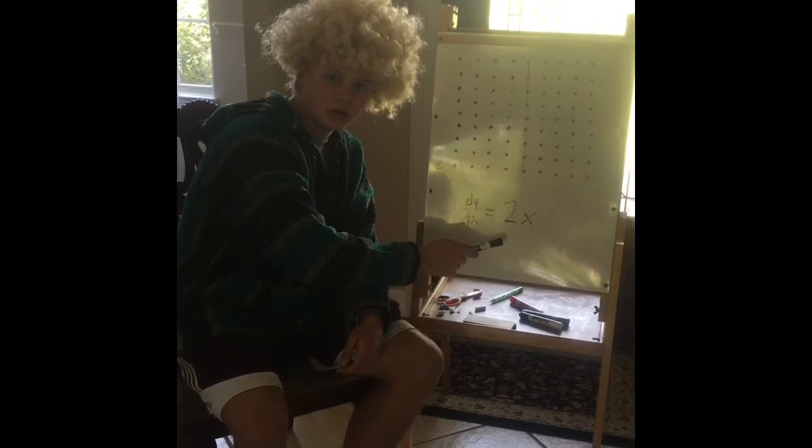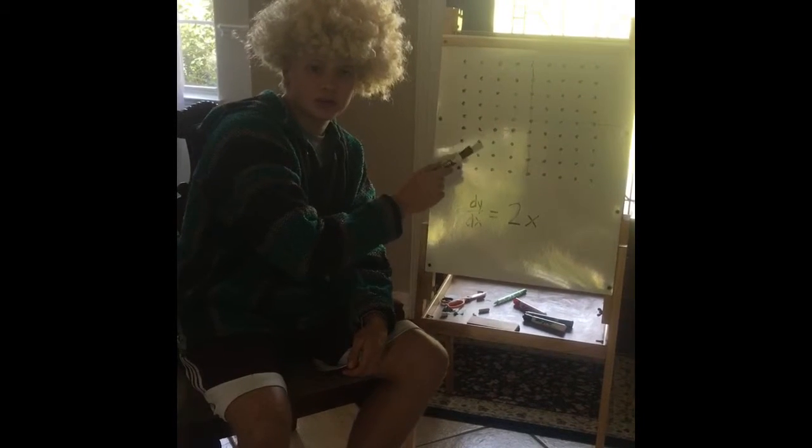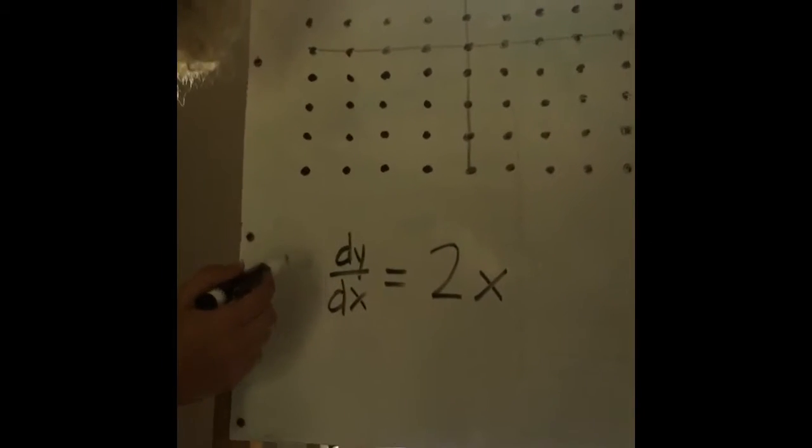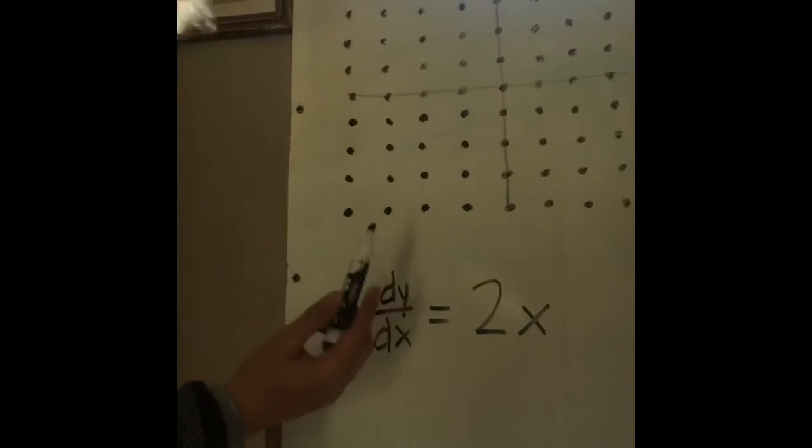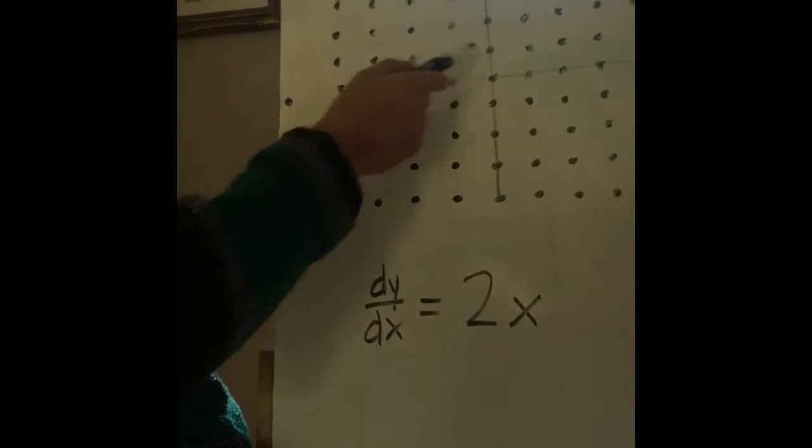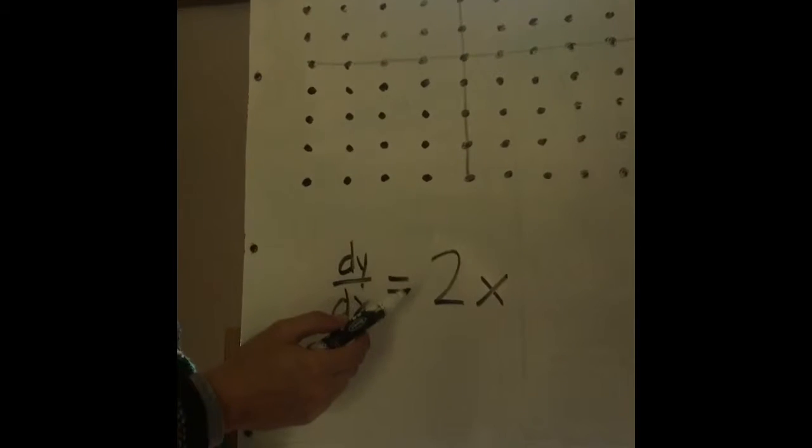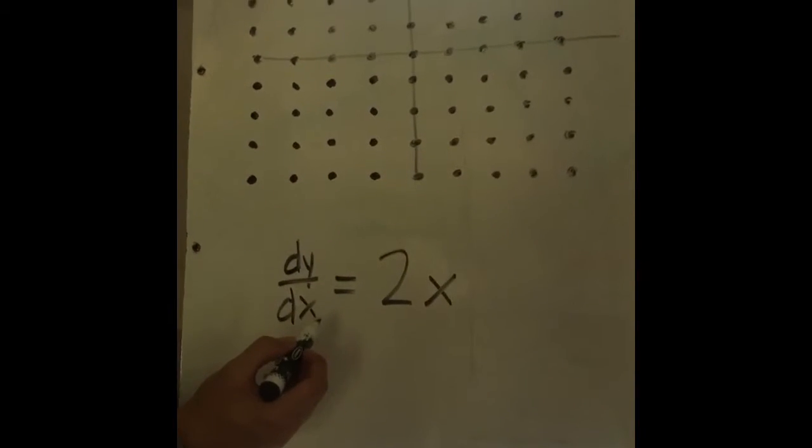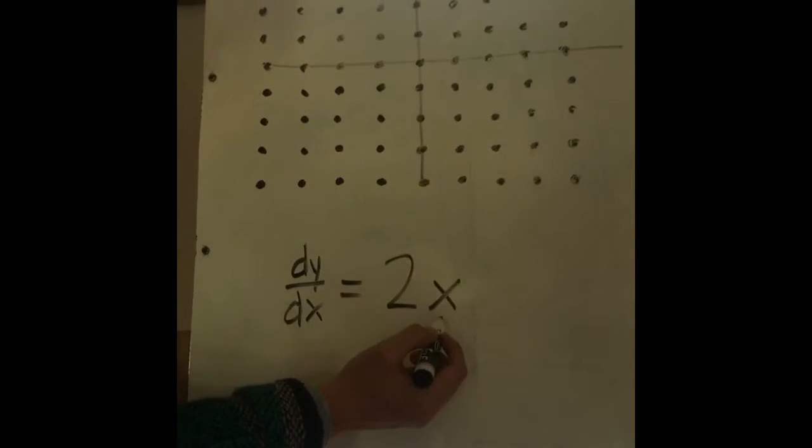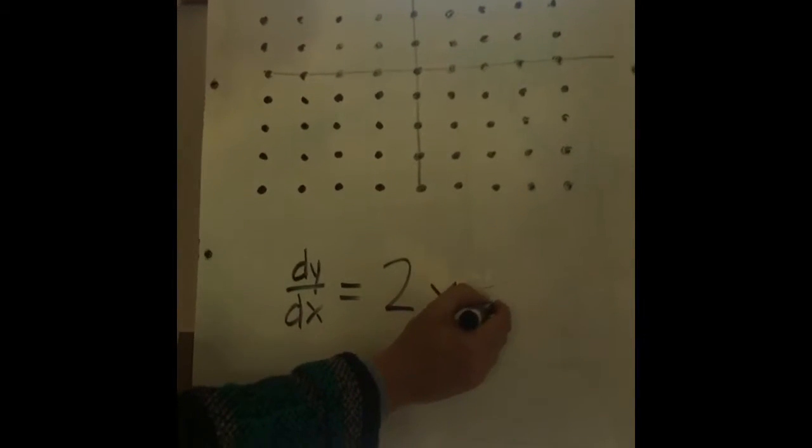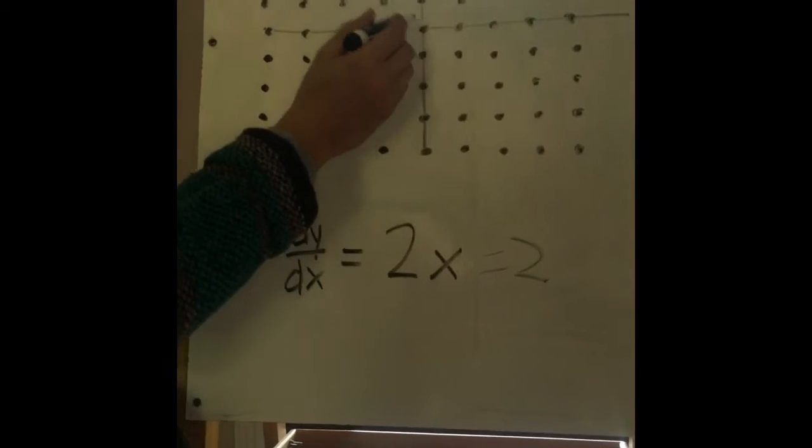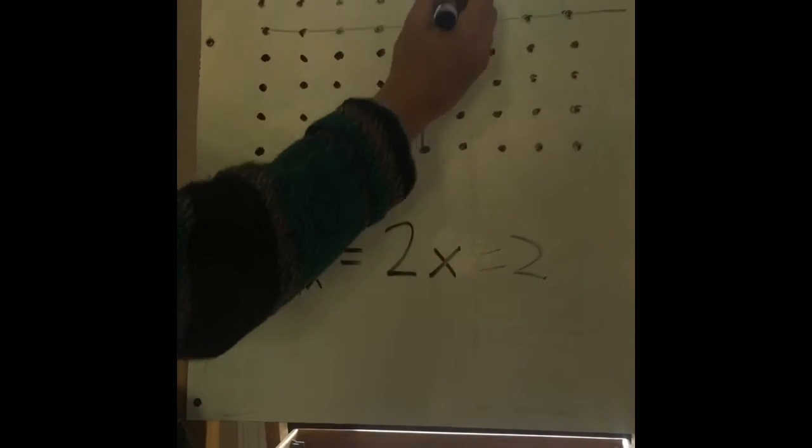To create a slope field, you plug individual points into the differential equation and graph the resulting slopes on those points. First, we're going to start with a simple one: dy/dx = 2x. We're going to take an individual point, (1, 1), and plug it into the equation. Since there's no y's, we're only going to plug the x coordinate 1 in, so we'll have 2 times 1 which equals 2. That means the slope at our point (1,1) will be 2.